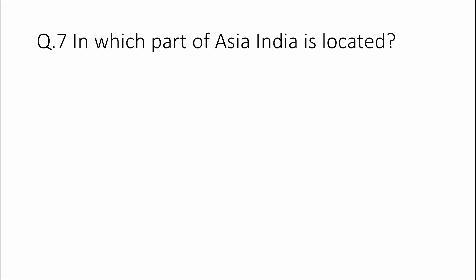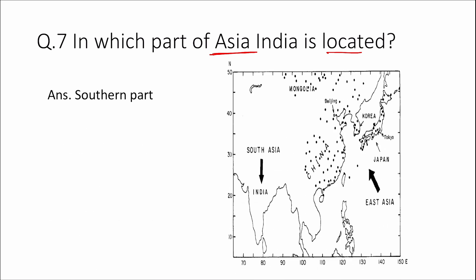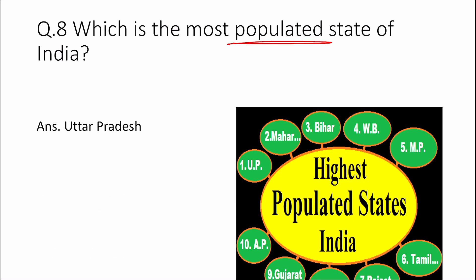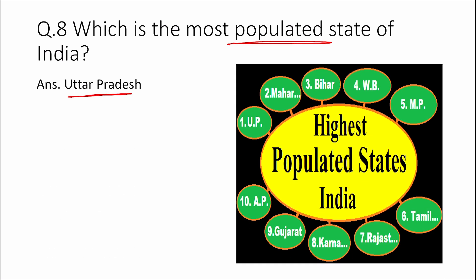Question 7: In which part of Asia is India located? Answer: Southern part. Question 8: Which is the most populated state of India? Answer: Uttar Pradesh. Uttar Pradesh is the most populated state of India, then Maharashtra, Bihar, West Bengal, and Madhya Pradesh. Area-wise, Rajasthan is the largest state of India.